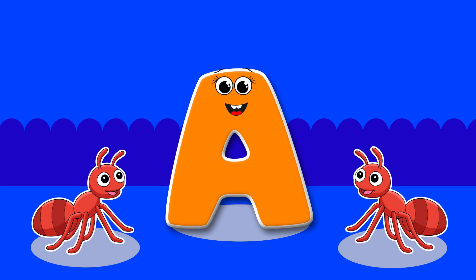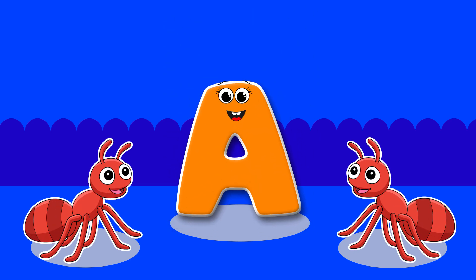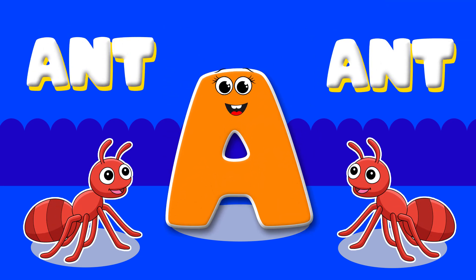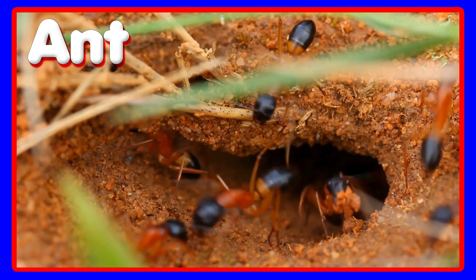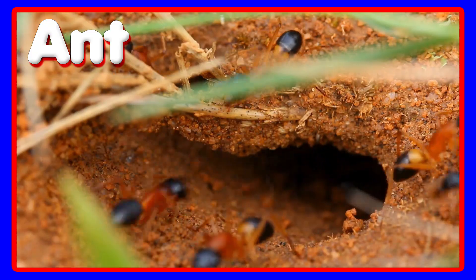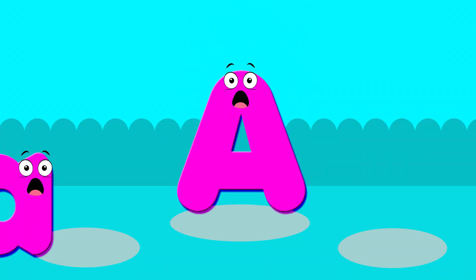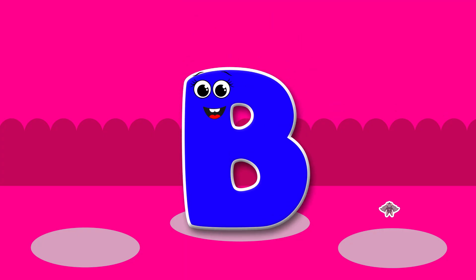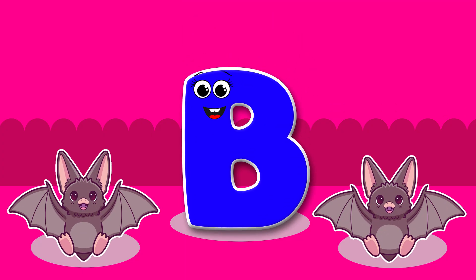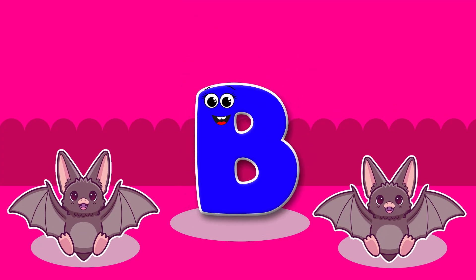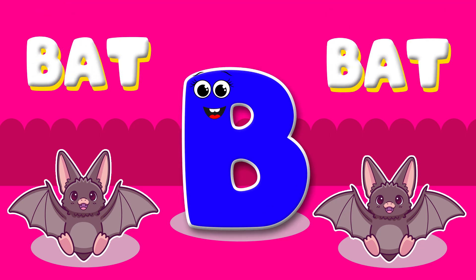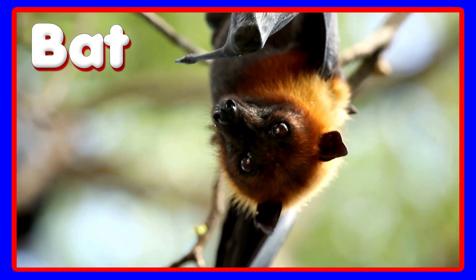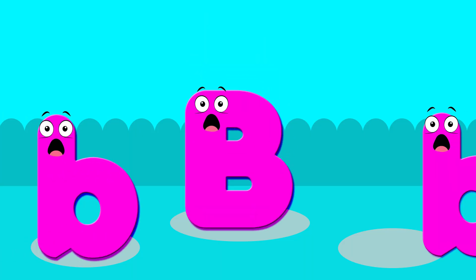A is for Ant, a-a-ant. A is for Ant, a-a-a. B is for Bat, b-b-bat. B is for Bat, b-b-b.